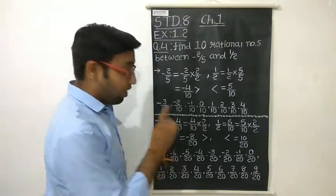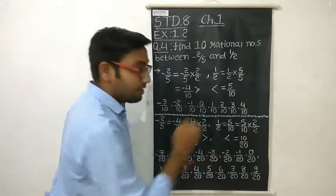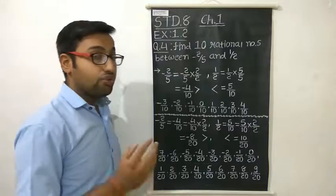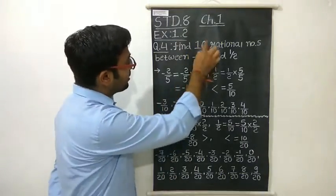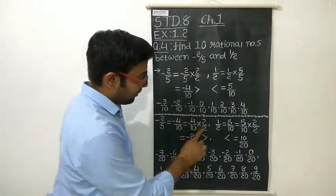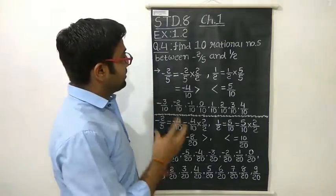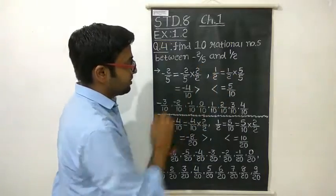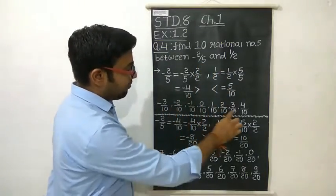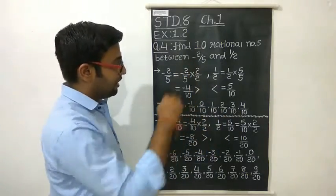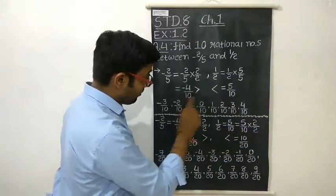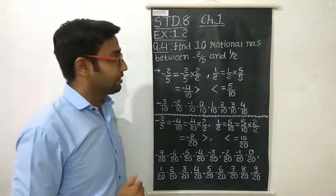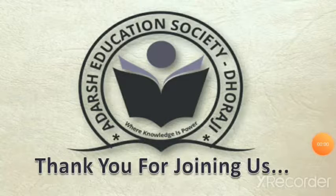If we had multiplied by 3 by 3 on both numbers, we would get even more numbers. And if we multiply by 10 by 10, we get many more numbers. But since the question asks for only 10 numbers, multiplying by 2 by 2 is sufficient. So the method is: first make both denominators the same, then check if we get the required number of rationals. If not, multiply both new numbers by a number greater than 1. In this way we can find the required rational numbers between two given rational numbers. Thank you for joining us.